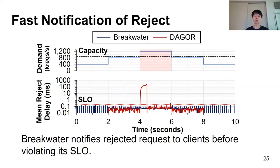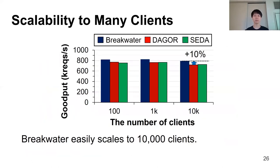To demonstrate how fast Breakwater notifies clients of request drops, we measure the reject delay — the time from request issue to reject message arrival at the client. Breakwater delivers the reject message to the client before violating the SLO, even when the server is overloaded, so that clients can act on the rejected request. On the other hand, Dagor's reject message is delayed up to a few hundredths of a millisecond during congestion collapse, making it hard for clients to distinguish whether the request is taking too long or the server is congested. Note that Theta doesn't drop requests at the server, so there are no reject messages for Theta in normal operation.